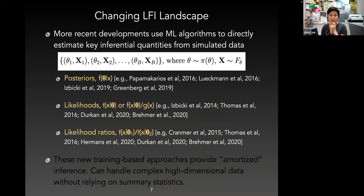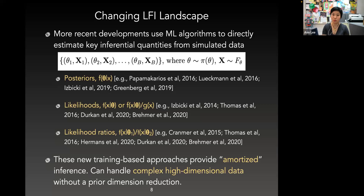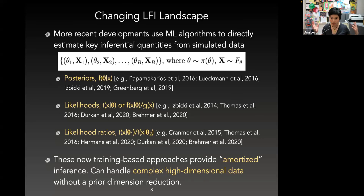More recent developments in LFI use machine learning algorithms to directly estimate the key inferential quantities from simulated data. You basically simulate your observable data under different parameter settings, treat this as a training sample, and directly estimate, for example, posteriors, likelihoods, or likelihood ratios. These training-based approaches provide amortized inference, which means that once you've done your training, you don't need to retrain — you can just make inferences on new observed data. It's very efficient, and because you leverage machine learning and AI methods, you can handle complex, high-dimensional data without prior dimension reduction.